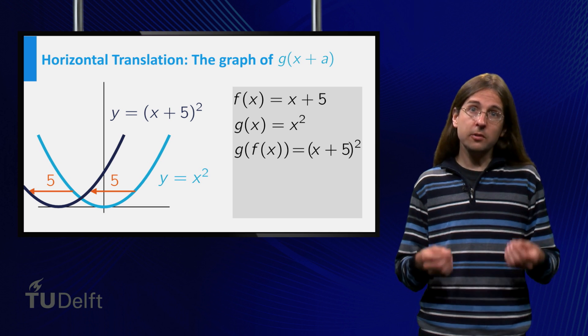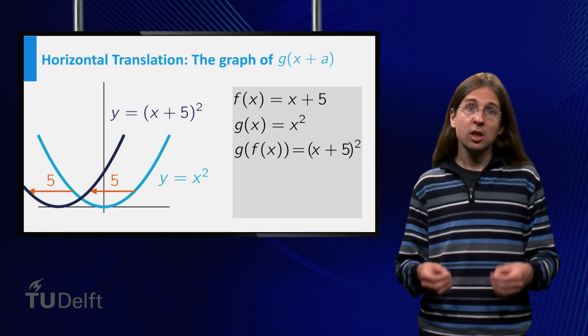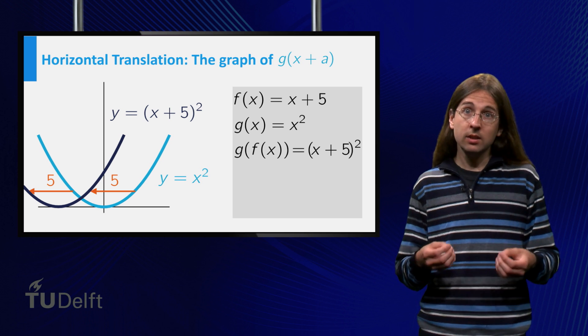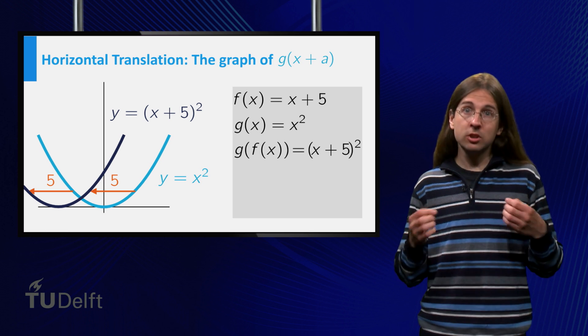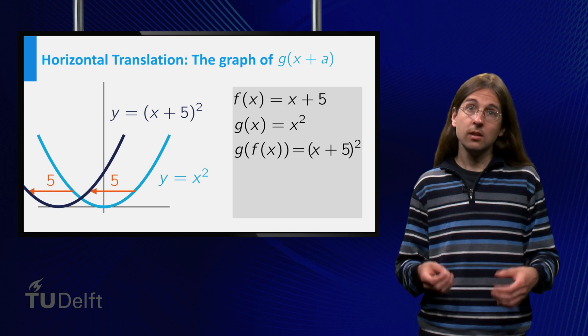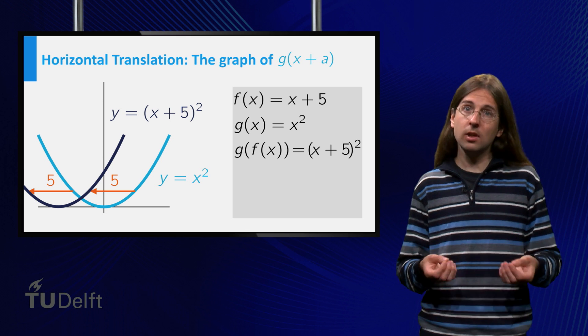Thus the graph of the function is the same, but for x plus 5 squared the x values must be reduced by 5, that is, the graph must be shifted to the left.